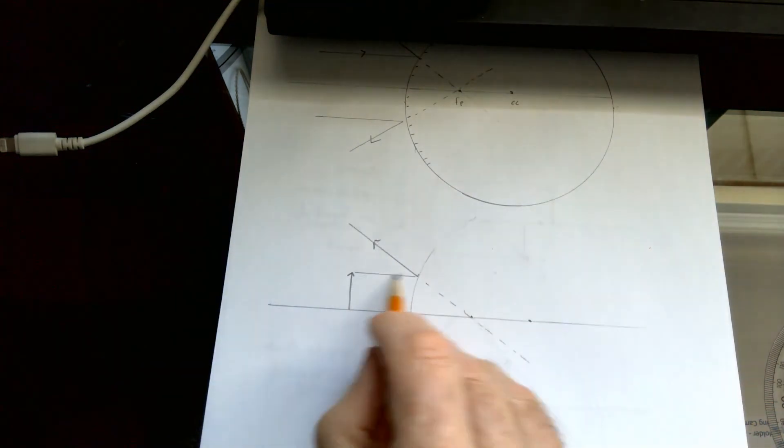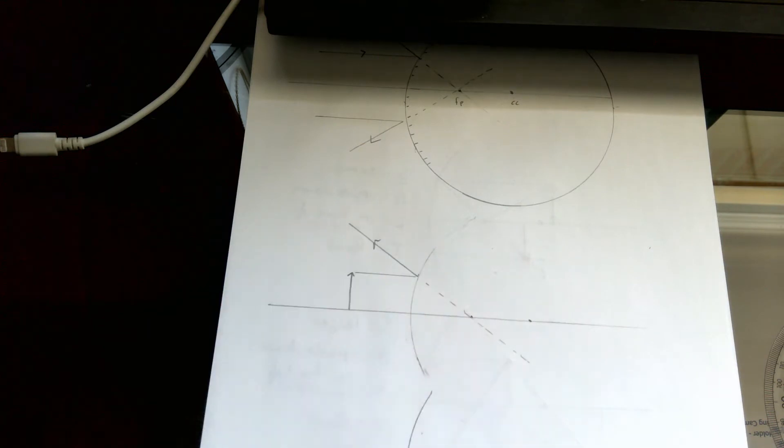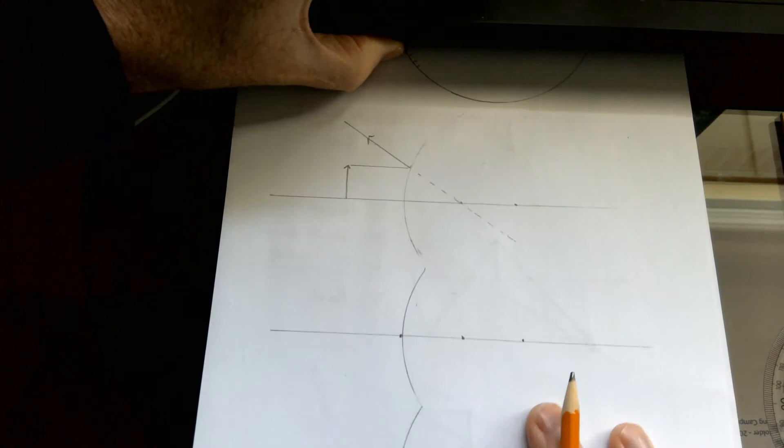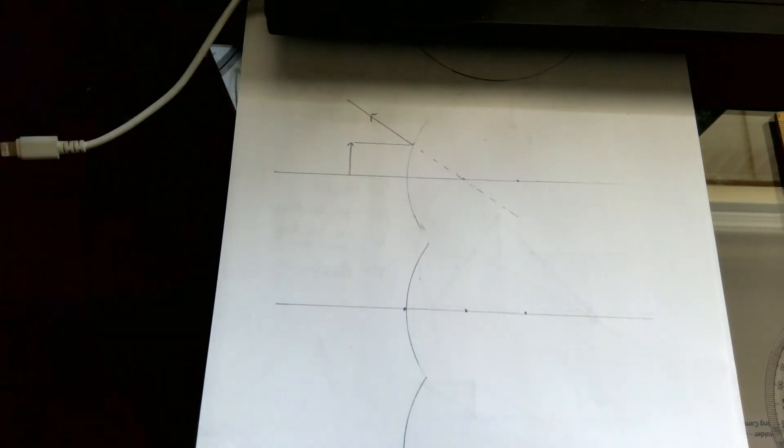So parallel to the principal axis, away from the focal point, and then extend it or extrapolate it backwards. Now, our next line that we can draw.